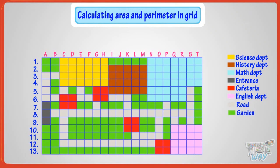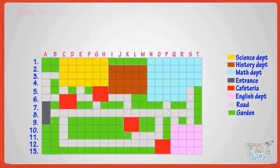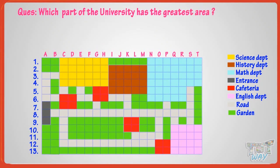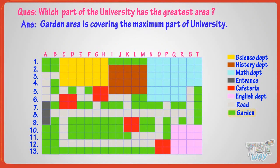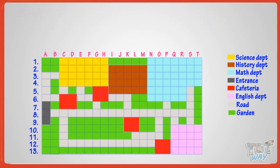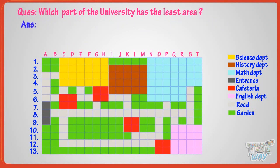Now, let's answer a few questions. Which part of the university has the greatest area? Garden area is covering the greatest area. Which part of university has the least area shown in map? Entrance gate is covering the least area of map.